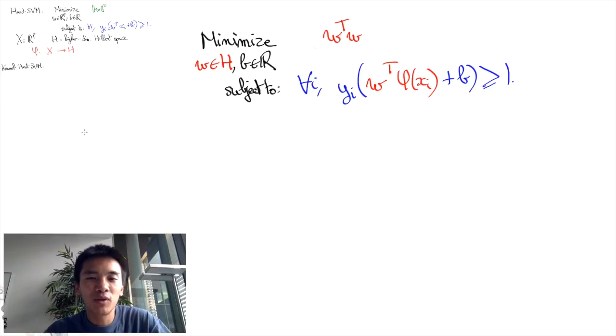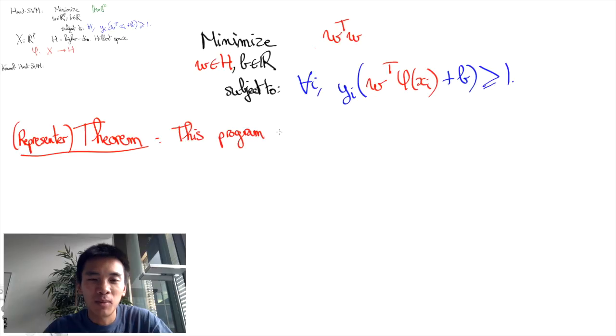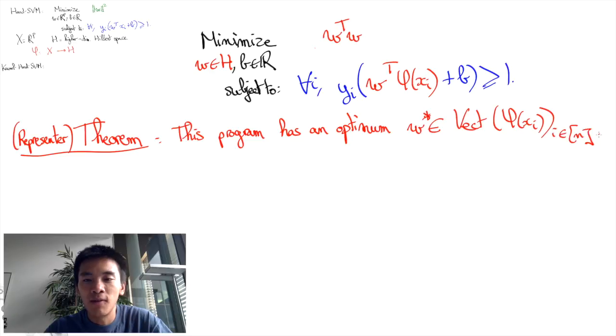Fortunately there is a very useful theorem we can use called the representer theorem. The theorem simply asserts that there is an optimum W star that is a linear combination of the embedded features phi of XI.